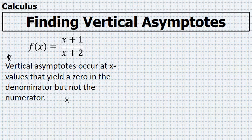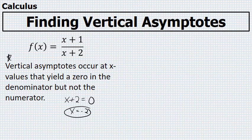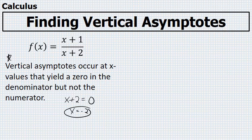So in this case, the value of x that will yield a 0 in the denominator, I'll set the denominator equal to 0 and find that I get x equals negative 2. Negative 2 does not yield a 0 in the numerator, so that means that this function, if I would sketch the curve, there will be a vertical asymptote.